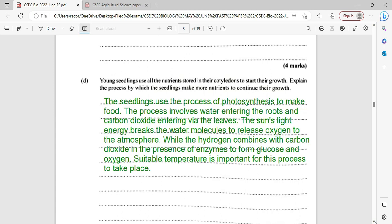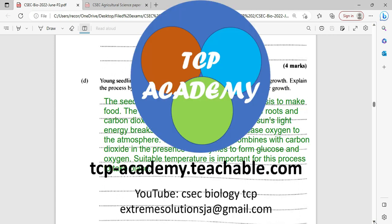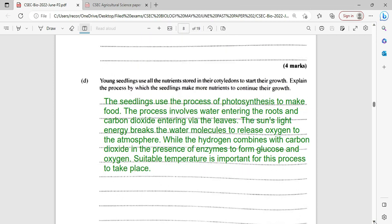Now, suitable temperature is very important for this process to take place. And of course, there must be some medium to trap the sunlight, be it chlorophyll, carotenoid, chlorophyll A, chlorophyll B, xanthophyll. Something must be there to trap the sunlight. Usually, it's chlorophyll.